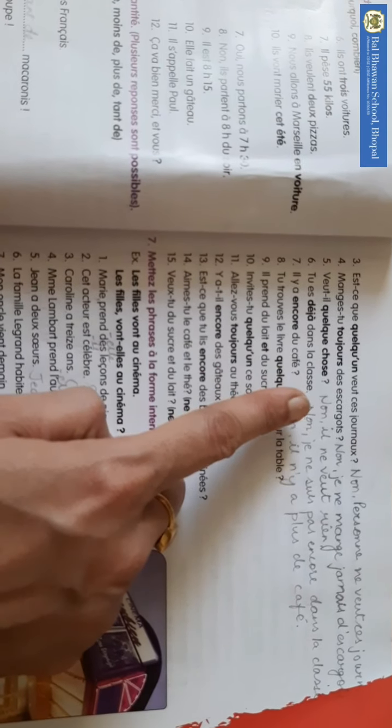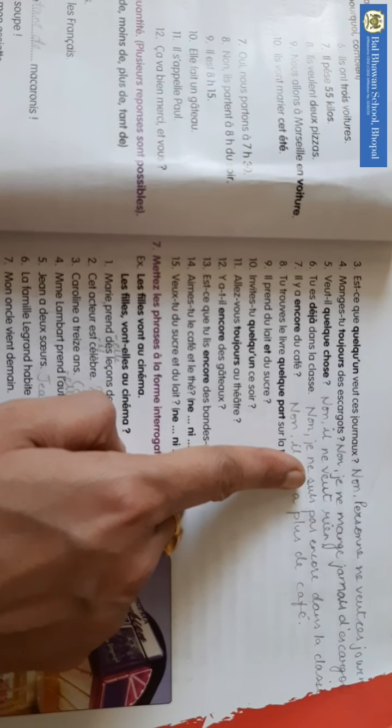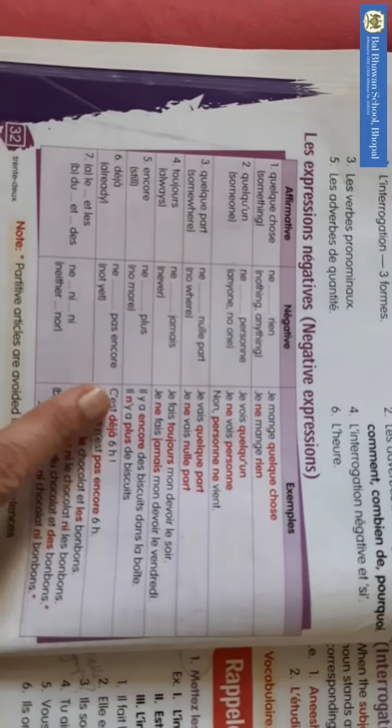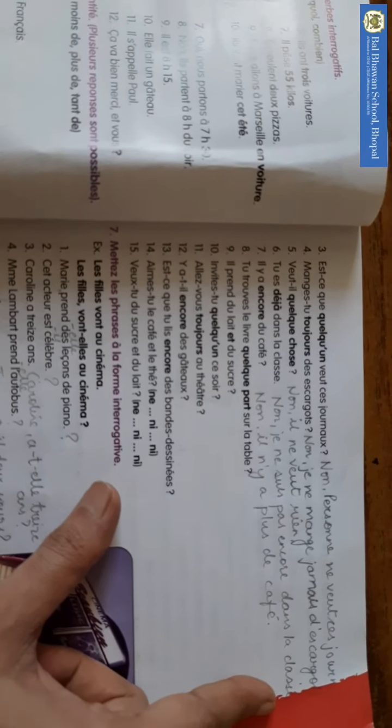Va il khalkashos? No. Il, na, vua, riyaan. Tu e deja dala class. Now, with deja, what will come? With deja, we write na, pa, encore. So here what will come? No. Je ne suis pas encore dans la classe.